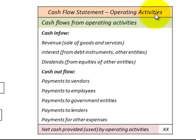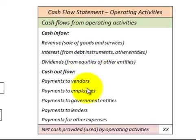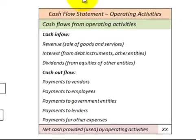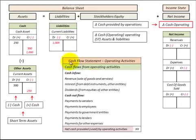For the cash flow statement for operating activities, cash inflows are revenues earned from sale of goods and services, interest earned on debt instruments held from other entities, and dividends from other entities. Cash outflows are expenses and payments to vendors, employees, government entities for taxes, and other expenses. We're looking at the cash flow through current liabilities and current assets flowing into net income as revenues and expenses.